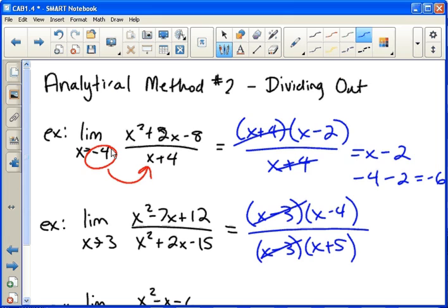Now if we plug in three, three minus four is negative one. Three plus five is eight. So we get negative one-eighth for our answer.